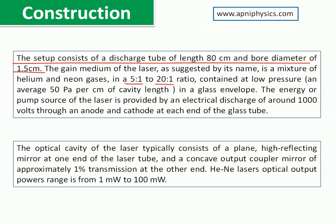Neon is responsible for the laser light in the helium-neon gas laser. All gases are kept in an electric discharge tube. The pump source is provided by an electrical discharge of around 1000 volts through an anode and cathode at each end of the glass tube. The optical cavity consists of a plane high-reflecting mirror at one end and a concave output coupler mirror of approximately 1% transmission at the other end. The optical output power ranges from 1 mW to 100 mW.